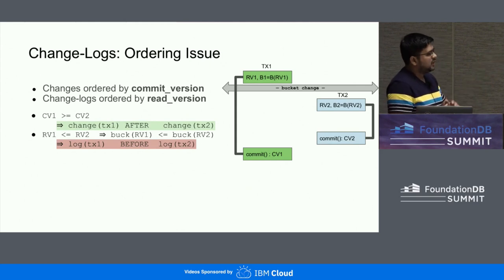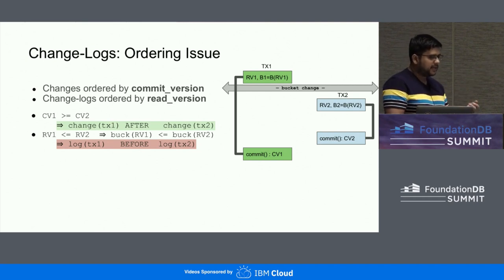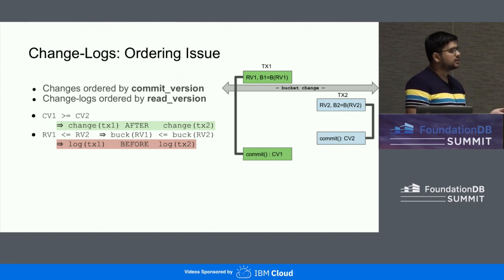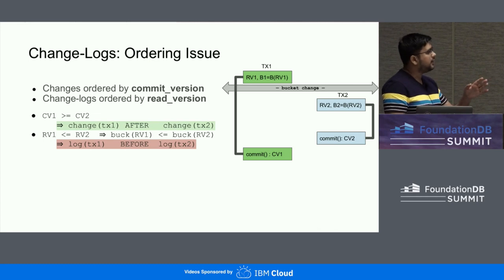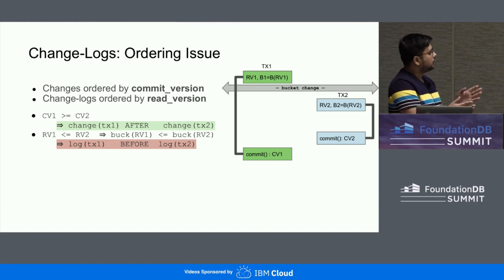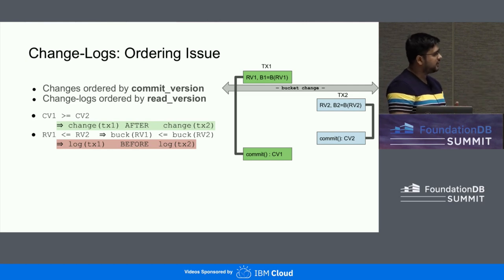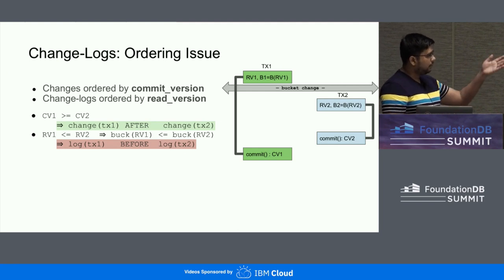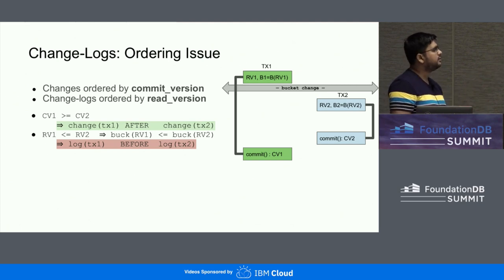However, this has an issue related to ordering. These buckets are based on the read version of the transaction, whereas the changes themselves are based on the commit version. Consider the example of TX1 and TX2: TX1 starts before TX2 and ends after TX2. The commit version of TX1 is higher than TX2, so it should appear after TX2. But if you look at the read version of TX1, it is before TX2's read version, and the bucket derived from TX1's read version could be before the bucket derived from TX2, putting the changelog in the reverse order.